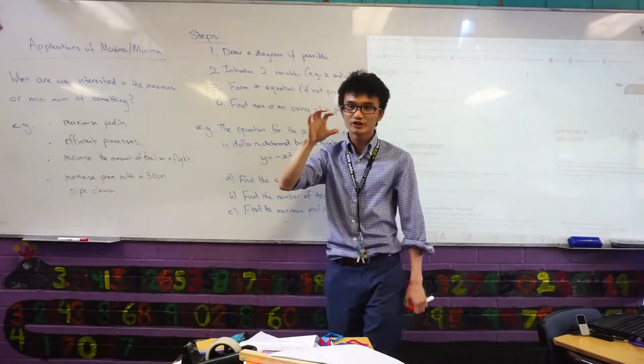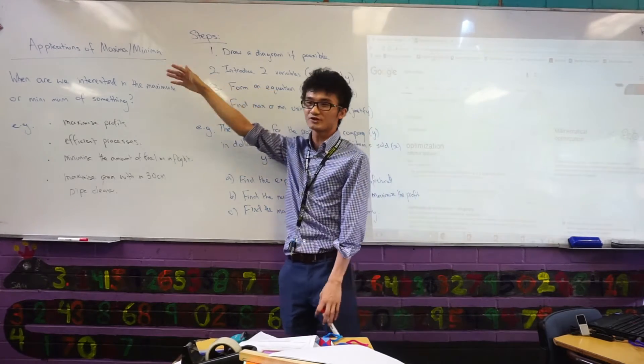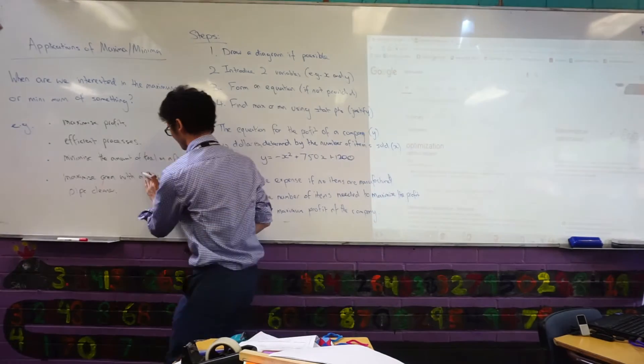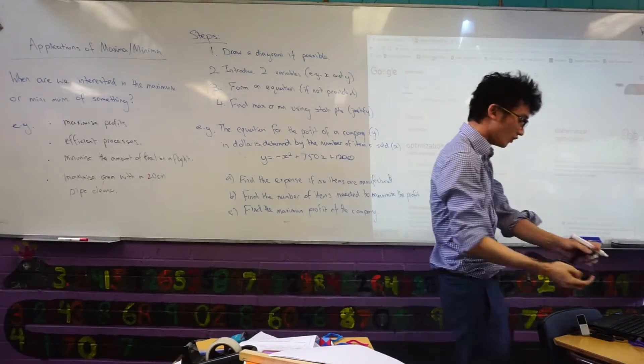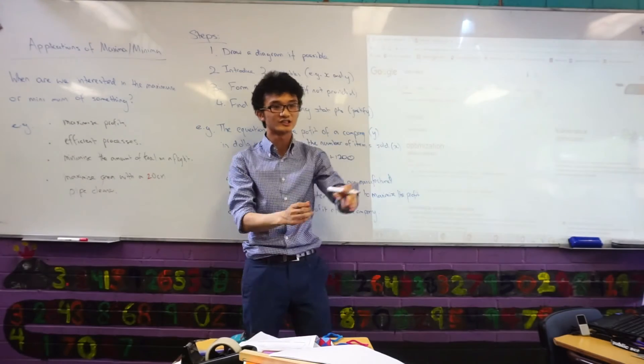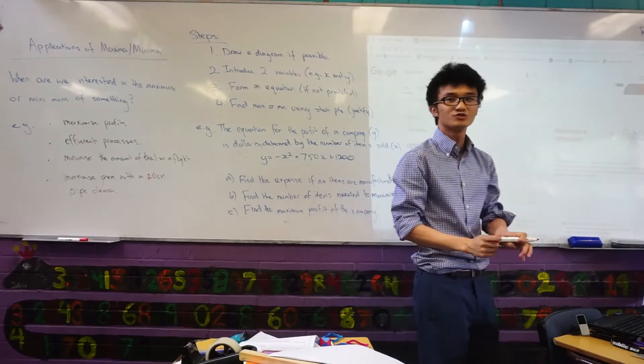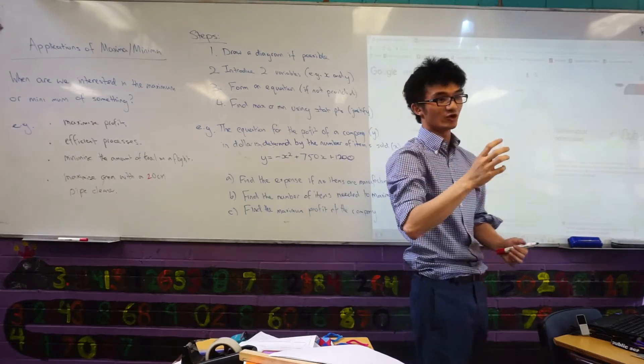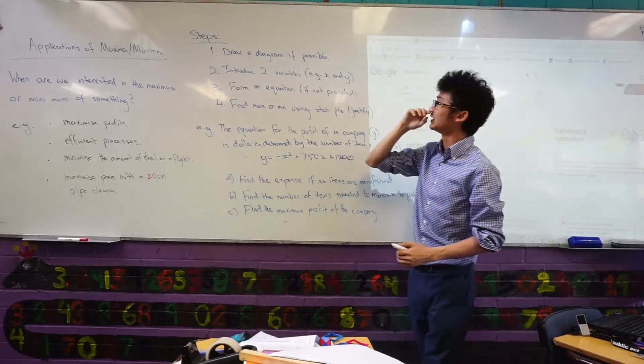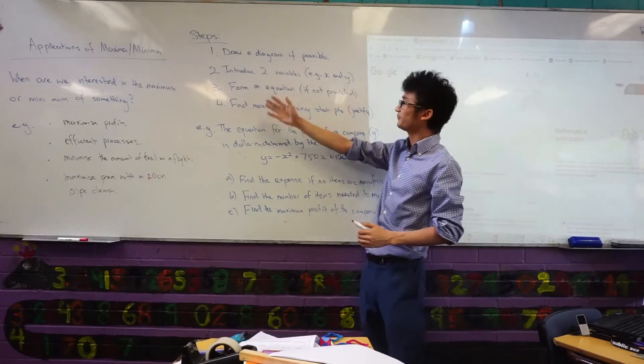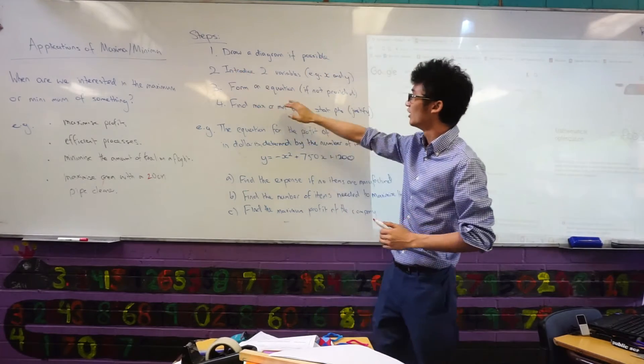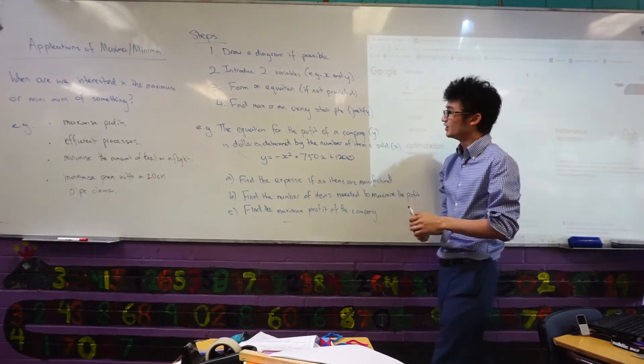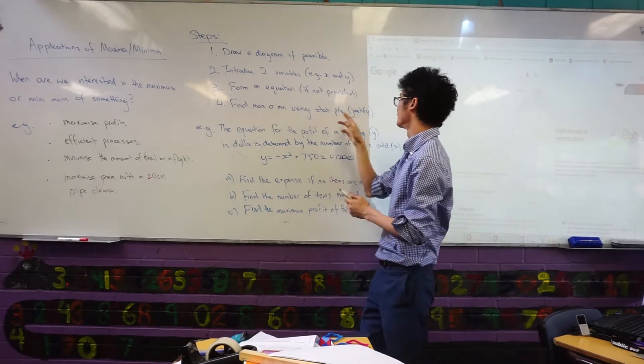So, when we are looking at these questions, the topic is called applications of maxima and minima. Or, we also call it optimization. Okay. This idea of optimization is trying to make, as Natasha said, efficient processes. Right. Having the best output with the least workload. And there are a few steps we take. The steps that we take are we draw a diagram if we can. We want to see what variables are involved. We want to form an equation if they don't give it to us. And lastly we want to find max or min using stationary points and justify it.